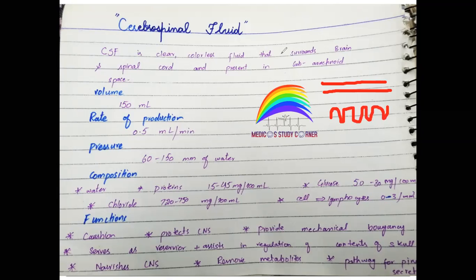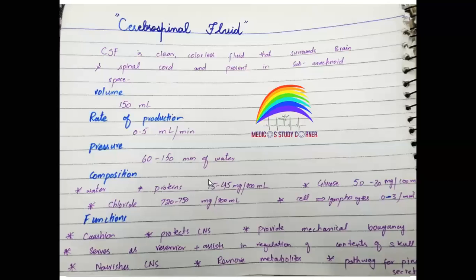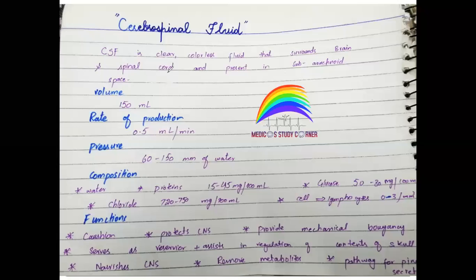In the middle of the arachnoid mater and pia mater, this area is called the subarachnoid space. The CSF is present in the subarachnoid space. We will discuss all of this one by one. First of all, CSF volume is 150 ml.